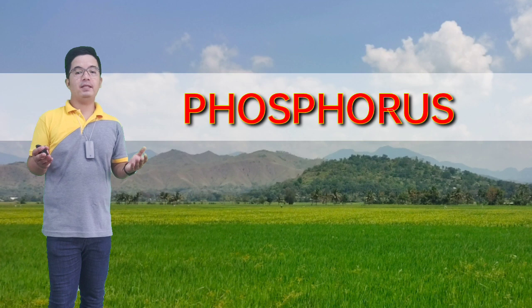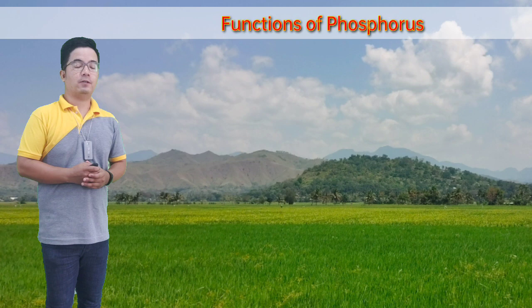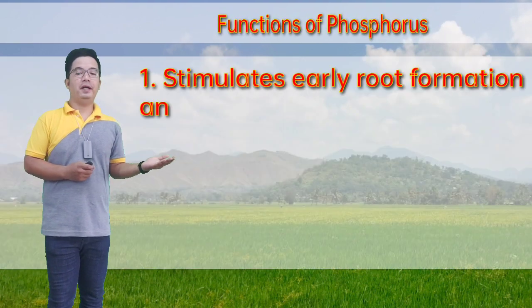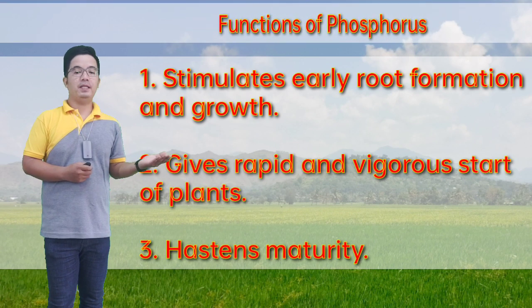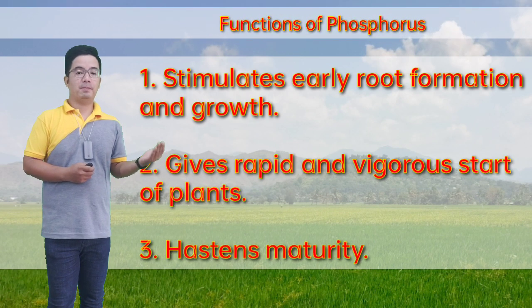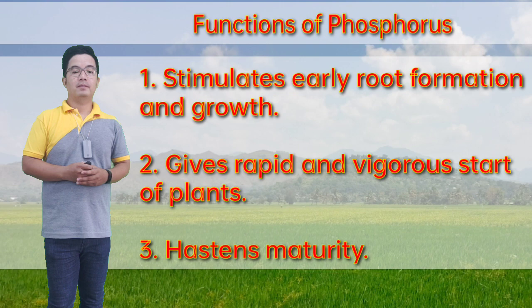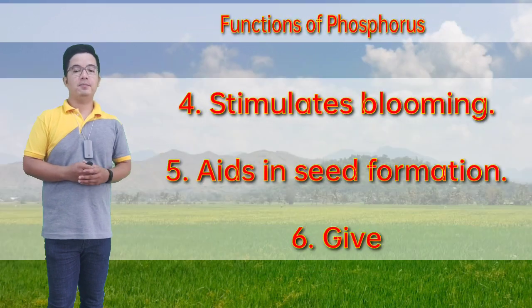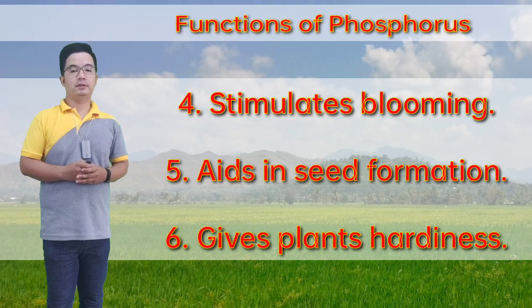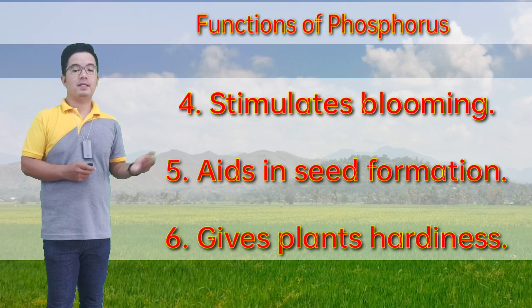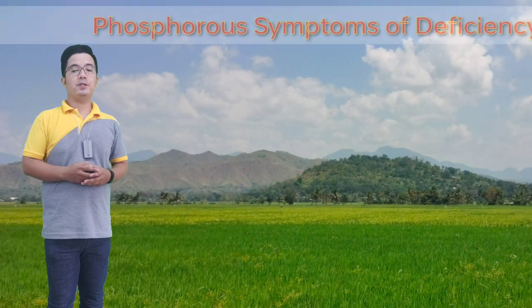Another plant food element is phosphorus. Functions of phosphorus: first, it stimulates early root formation and growth, and gives a rapid and vigorous start to plants. It also stimulates blooming, aids in seed formation, and gives plants hardiness.